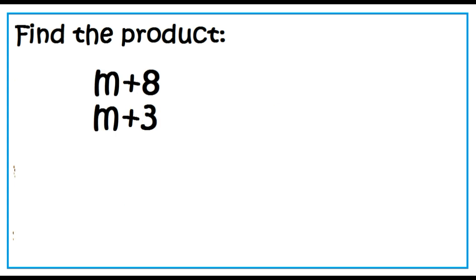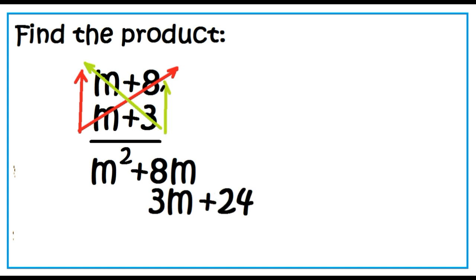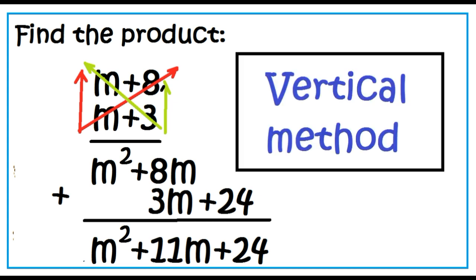Another way of multiplying two binomials is the vertical method. For the quantity M plus 3 times M plus 8: M times M is M squared, M times 8 is 8M, 3 times M is 3M, 3 times 8 is 24. Combining 8M and 3M gives 11M. The answer is M squared plus 11M plus 24.